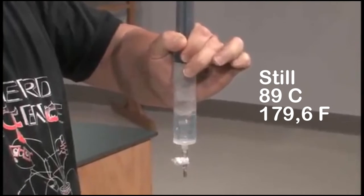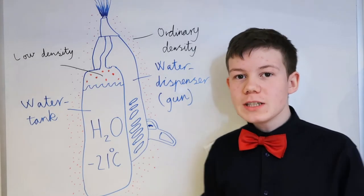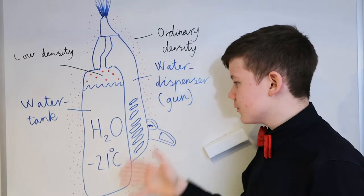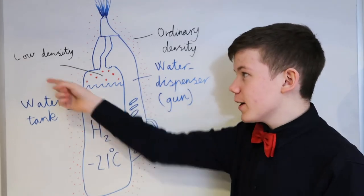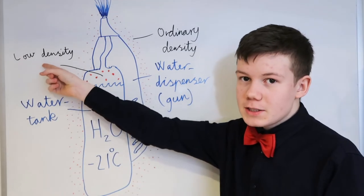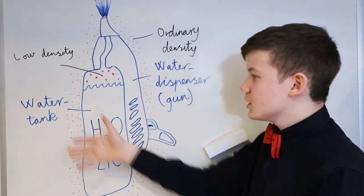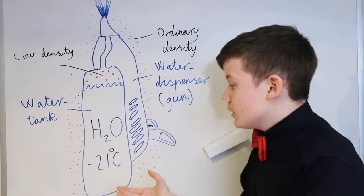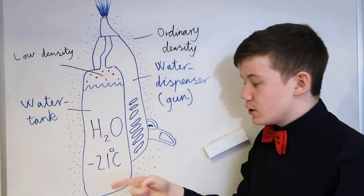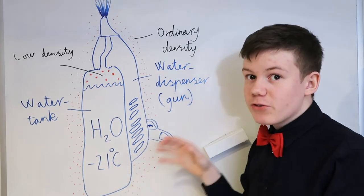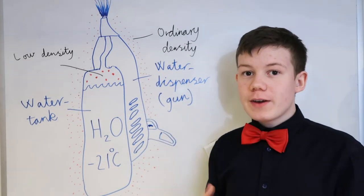Now we get into how Mr. Freeze's ice gun would work. Mr. Freeze could keep water inside his gun cold at all times, but under very low density so that the water won't freeze, but stays in its liquid form. He could then push it out — the water would still have its own temperature, but freeze inside the ordinary density atmosphere.